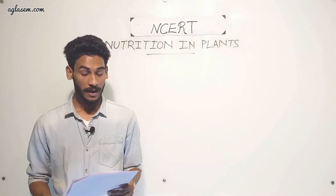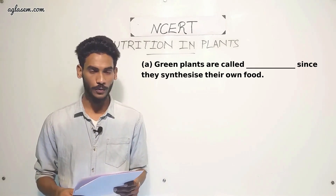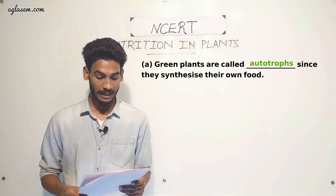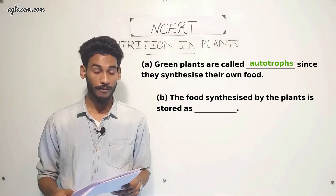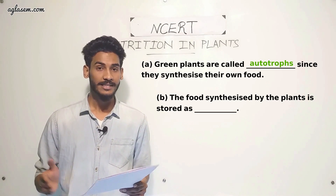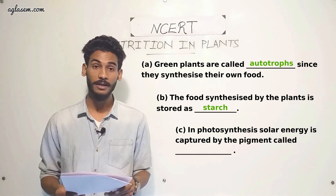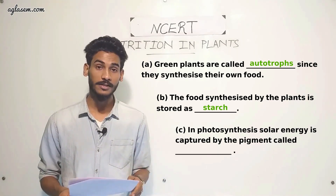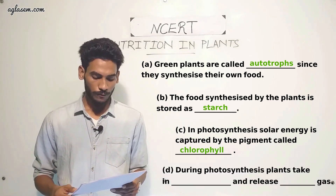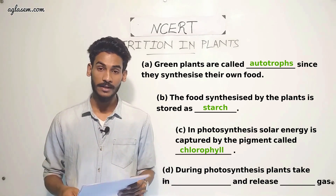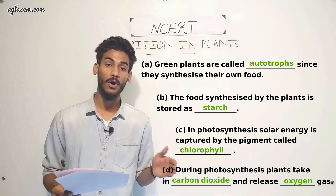Question 6 — Fill in the blanks. A: Green plants are called autotrophs since they synthesize their own food. B: The food synthesized by the plant is called starch. C: In photosynthesis, solar energy is captured by the pigment called chlorophyll. D: During photosynthesis, plants take in carbon dioxide and release oxygen gas.